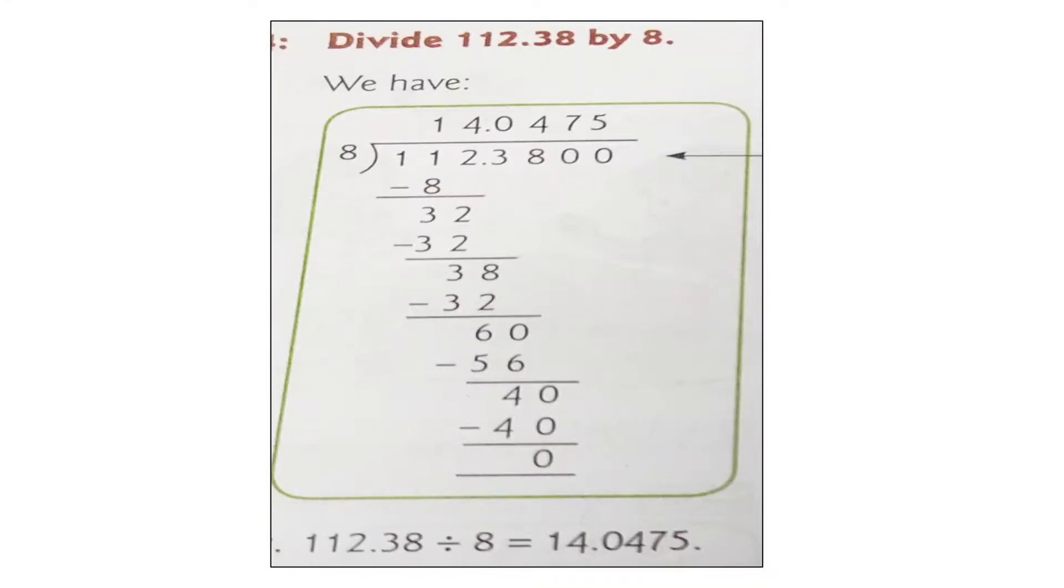60 minus 56 is 4. Put another 0 and bring down this 0. 8 fives are 40, and your answer will be 14.0475. Remember, we have to put 0 in the quotient till we get 0 as remainder.